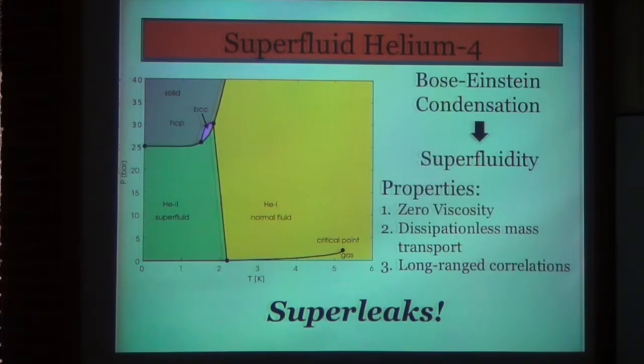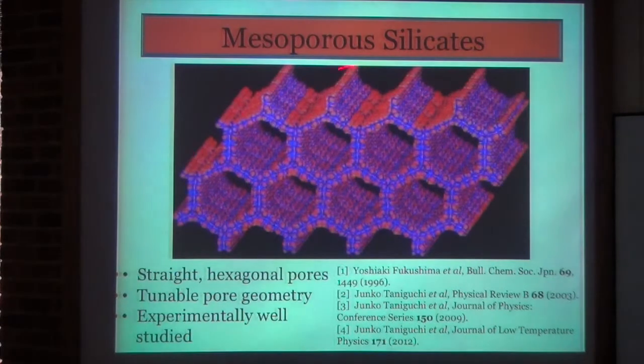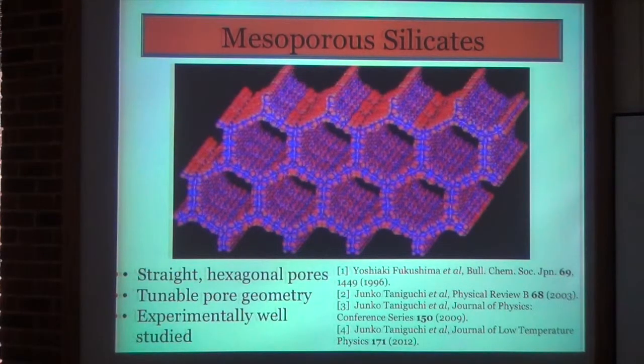In my study, I'm examining mostly this zero viscosity aspect of the fluid. Because of this, helium can flow through very tiny nanopores such as those found in mesoporous silicates, often referred to as a super leak. So now I want to talk a little bit about mesoporous silicates. Here's an image to give you a visual picture of what they are. It's basically a honeycomb of silicon. You see straight hexagonal pores. The pore size is completely tunable experimentally, which is a really desirable property because it allows you to examine how the size of the pore affects the behavior of the helium inside of it.